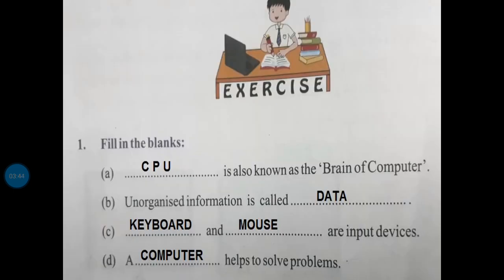Let's see the exercise. चलिए आज हम लोग इस chapter का exercise देखते हैं. CPU के द्वारा सारा processing का काम होता है, इसलिए CPU का हम लोग brain of computer कहते हैं — so the first fill in the blank answer is CPU. दूसरा: unorganized information is called data, which remains in raw form. And keyboard और mouse standard input devices होते हैं.